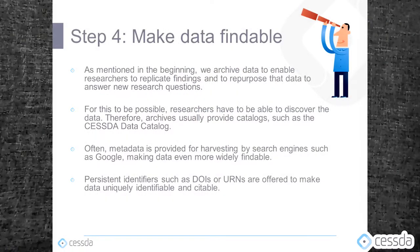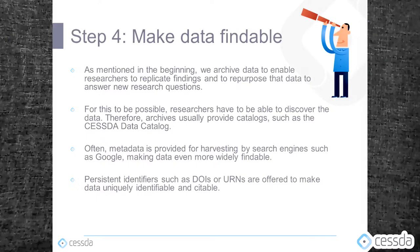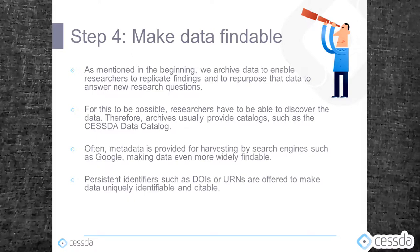The fourth step: make the data findable. As mentioned in the beginning, we archive data to enable researchers to replicate findings and to repurpose that data to answer new research questions. For this to be possible, researchers have to be able to discover the data. Therefore archives usually provide catalogs such as the GESIS data catalog. Often metadata is provided for harvesting by search engines such as Google, making data even more widely findable. Persistent identifiers such as DOIs or URNs are offered to make data uniquely identifiable and citable.